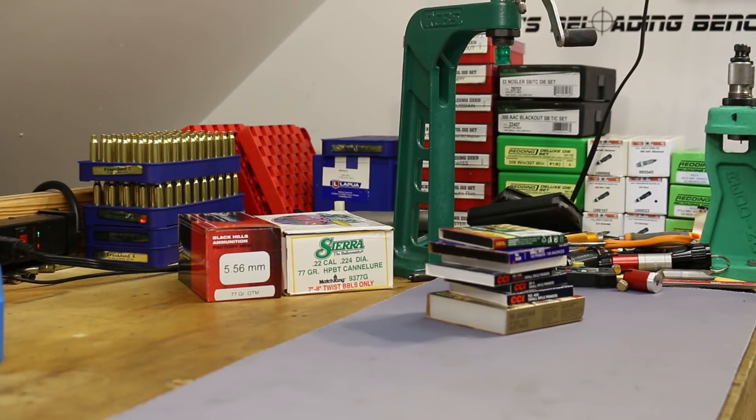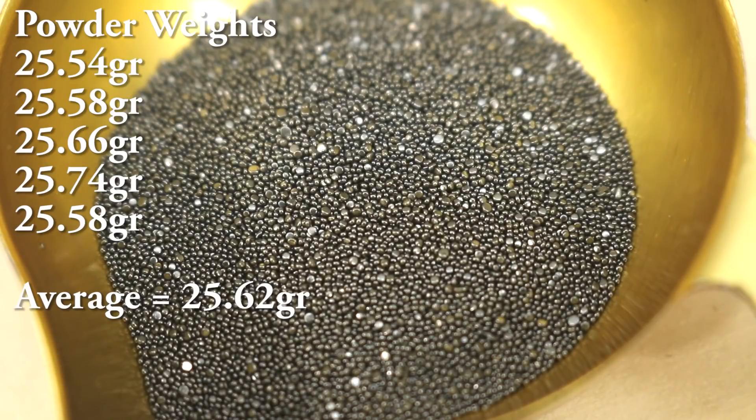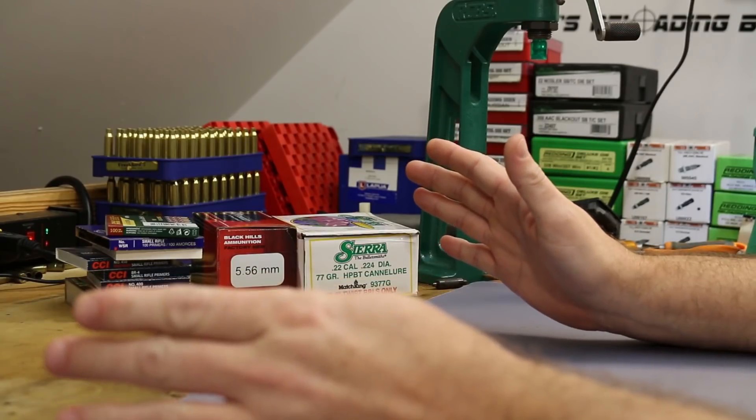When I dumped the powder, what I found was a ball powder, a spherical powder, which wasn't a huge surprise after hearing about all of the temperature sensitivity issues this round has had in the past. Ball powders are generally a little bit worse about that than extruded powders. The charge weights were pretty consistent. The lightest was 25.54 and the highest was 25.74, so about a two-tenths of a grain swing there. That was good to see. But the charge weight itself is higher than I thought, higher than I expected. 25.62 grains of whatever this mystery powder is - that's a ton of powder. The fact that it's a large powder charge means it's almost certainly on the very slow side of the normal .223 powder range.